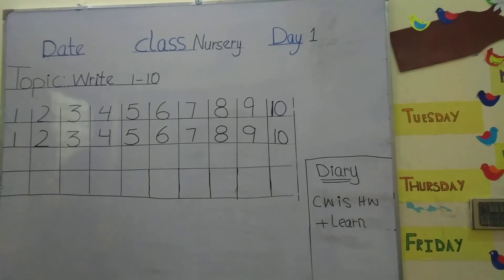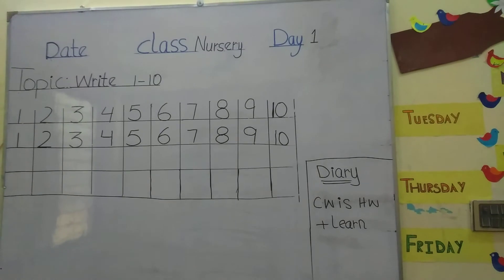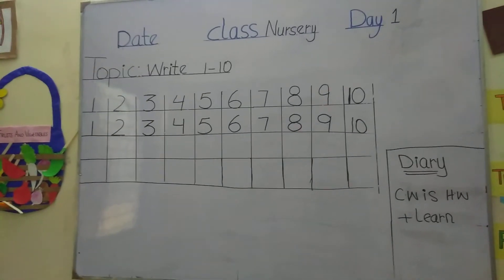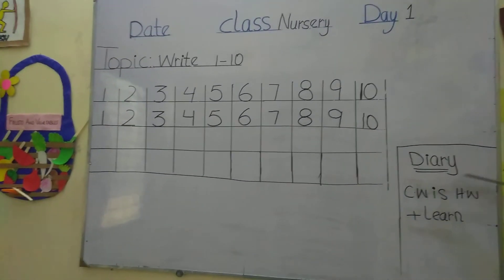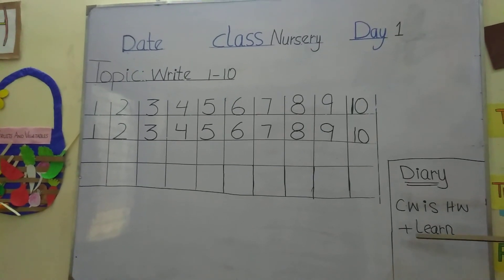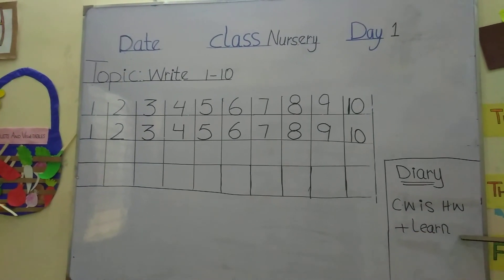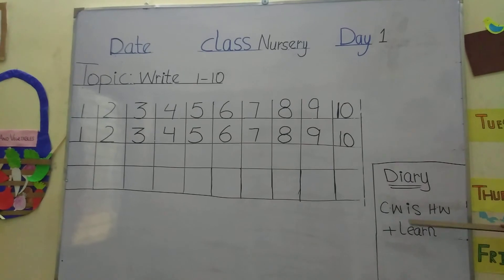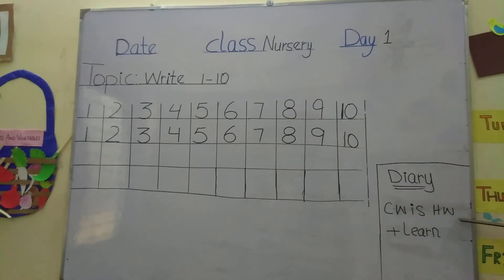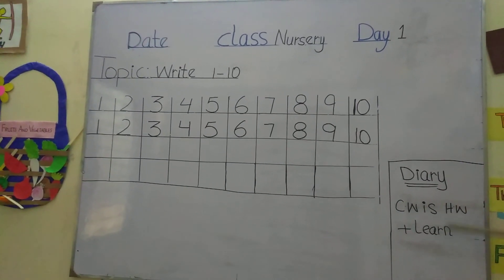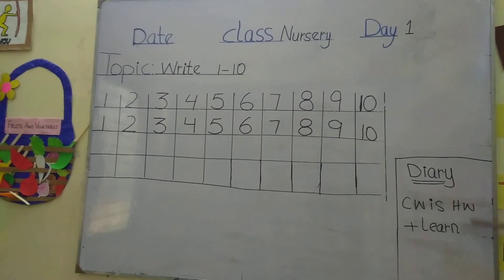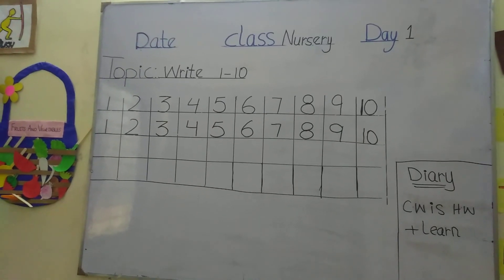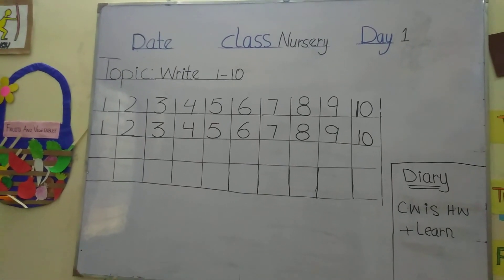And here is your diary. CW is HW — plus learn. Whatever was CW, you have to do as HW and learn how to write 1 to 10. Thank you students.